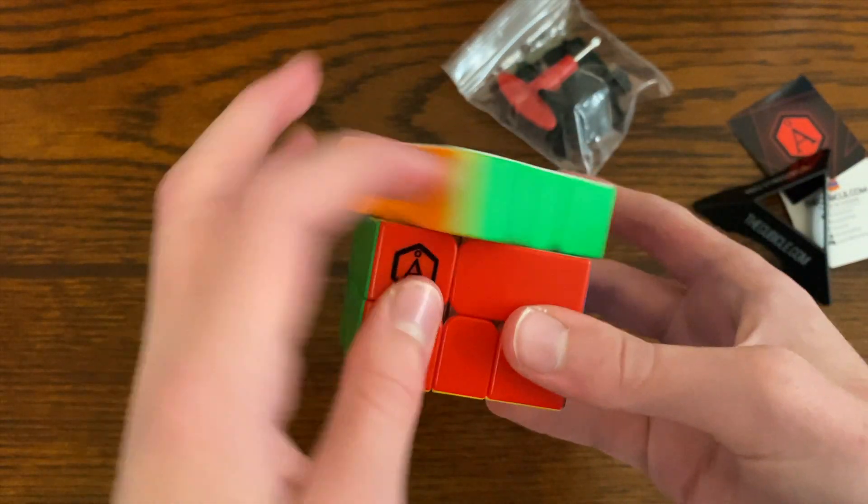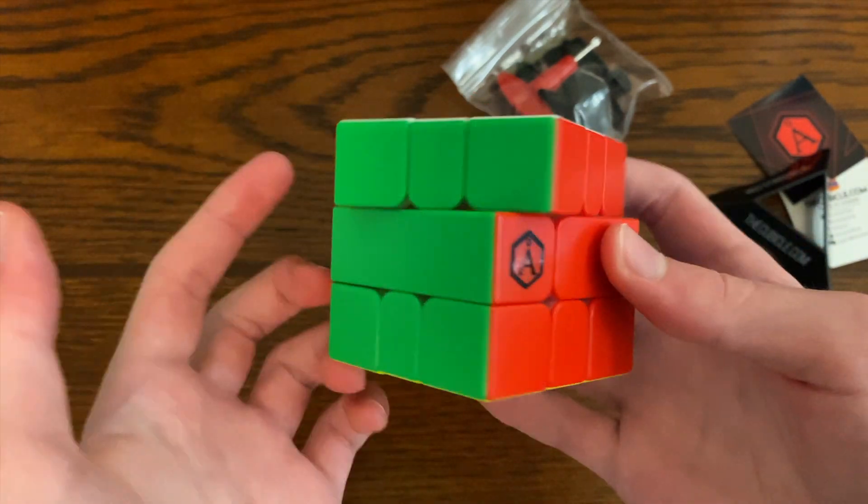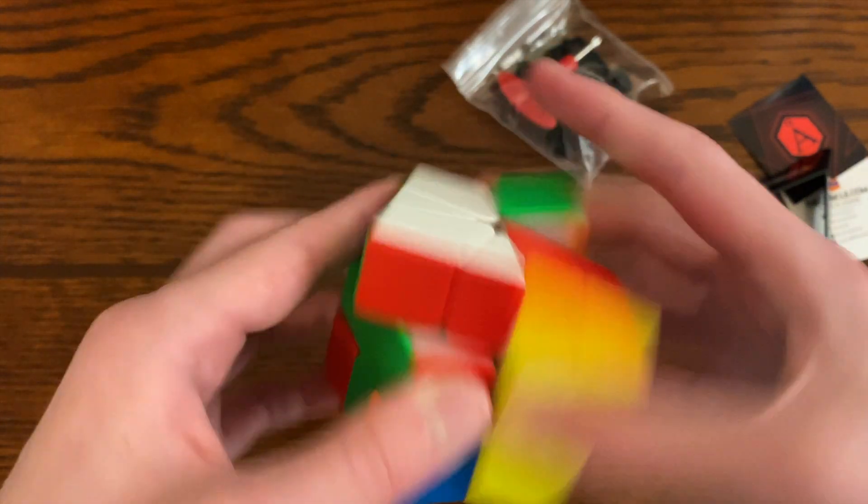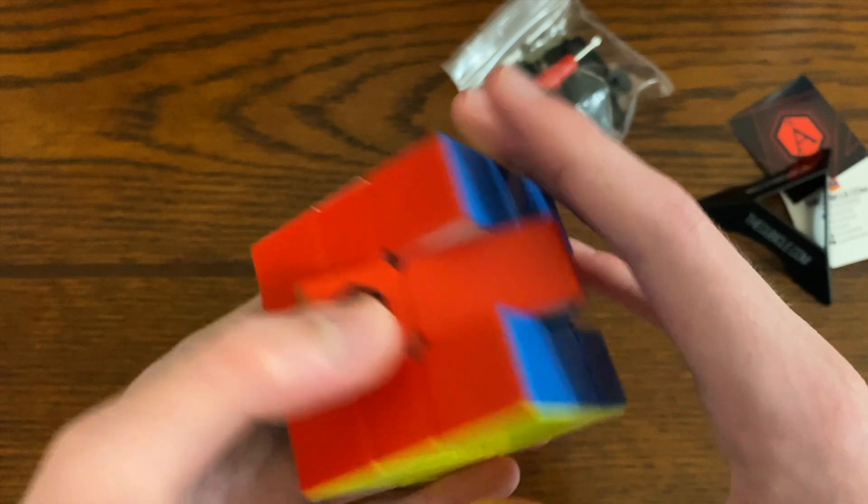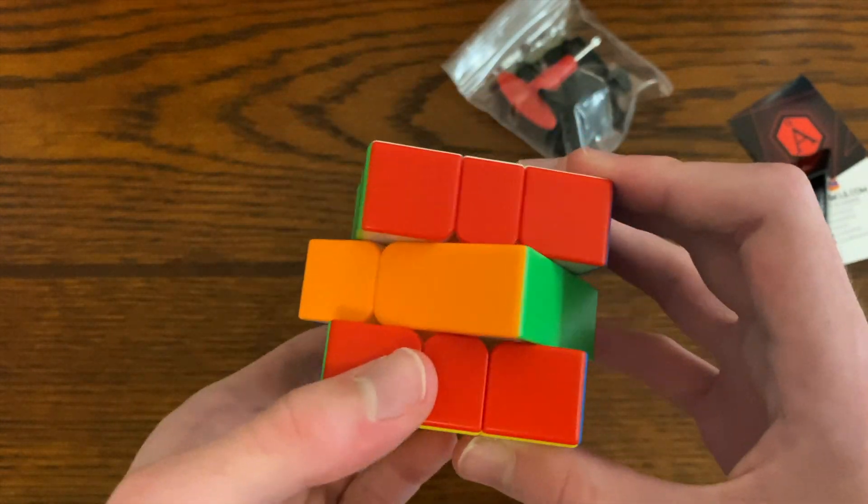So this cube is really good. My only problem with it is that there's no magnets in here - I might have to mod it - and that it's just way too fast. In my opinion, a lot of people like the square ones really fast, but personally I don't, so I'm probably going to have to slow this down, probably with Gravitas.